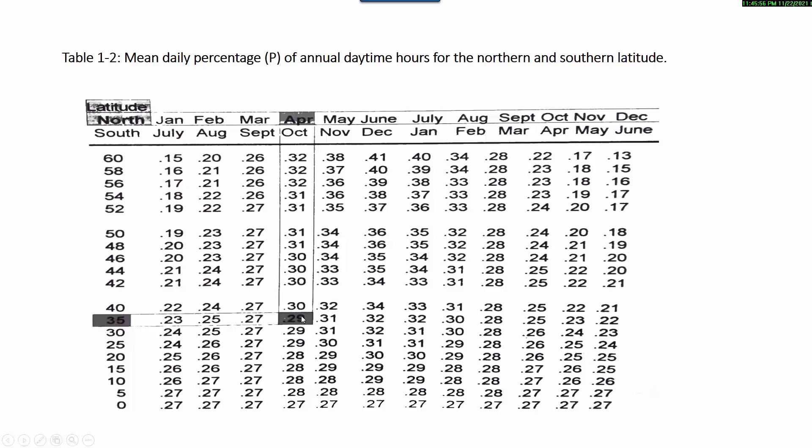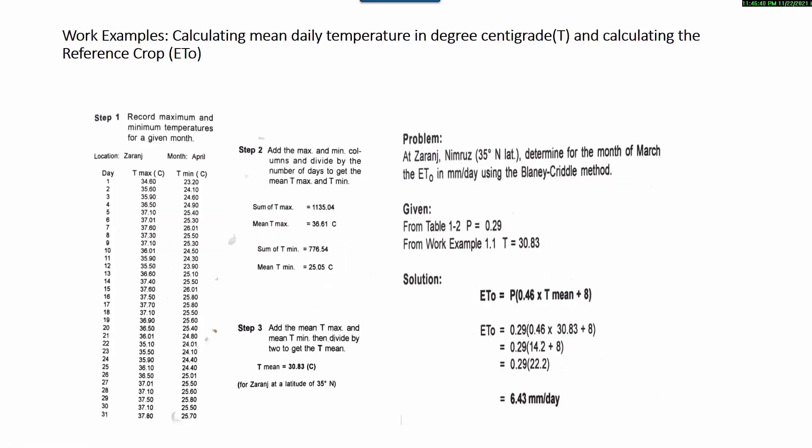The mean daily percentage p of annual daytime hours for the northern latitude is 0.29. This location is Zaranj. For example, calculating mean daily temperature in degrees Centigrade and calculating the reference crop evapotranspiration, we do this example through three steps. First, we record the maximum and minimum temperature for a given month, for example April, in Zaranj at northern latitude 35. From day 1 up to day 30, we record the maximum and minimum temperatures.